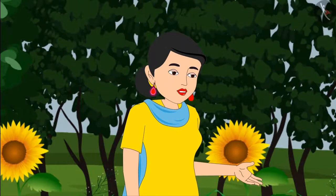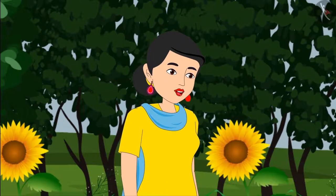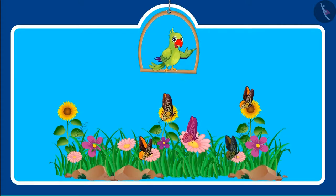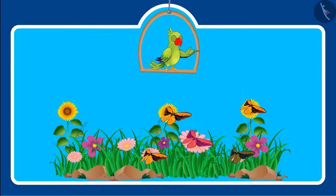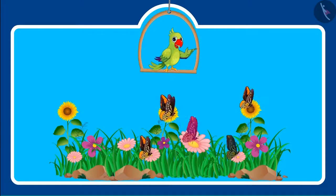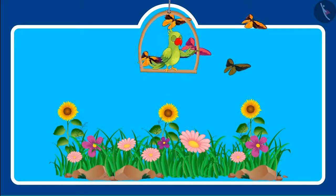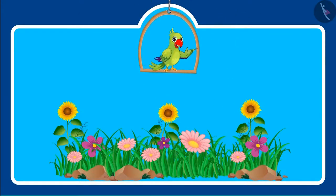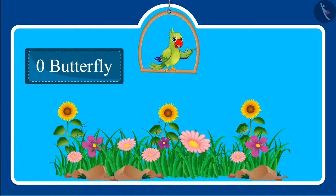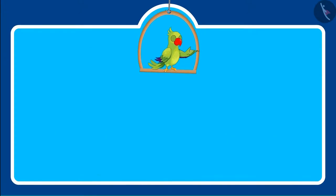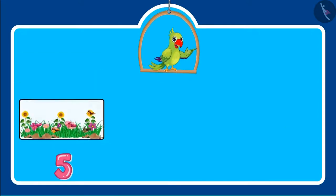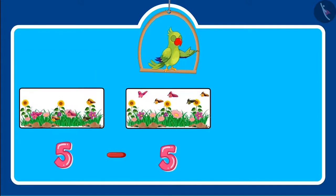Don't worry, Pinky, there are so many butterflies in this garden — you will see them on some other flower. So children, if out of the five butterflies all five butterflies flew away, how many butterflies are left? There is not even a single butterfly left on the flower. This means zero butterflies are left. You also got the same answer, right? Very good!